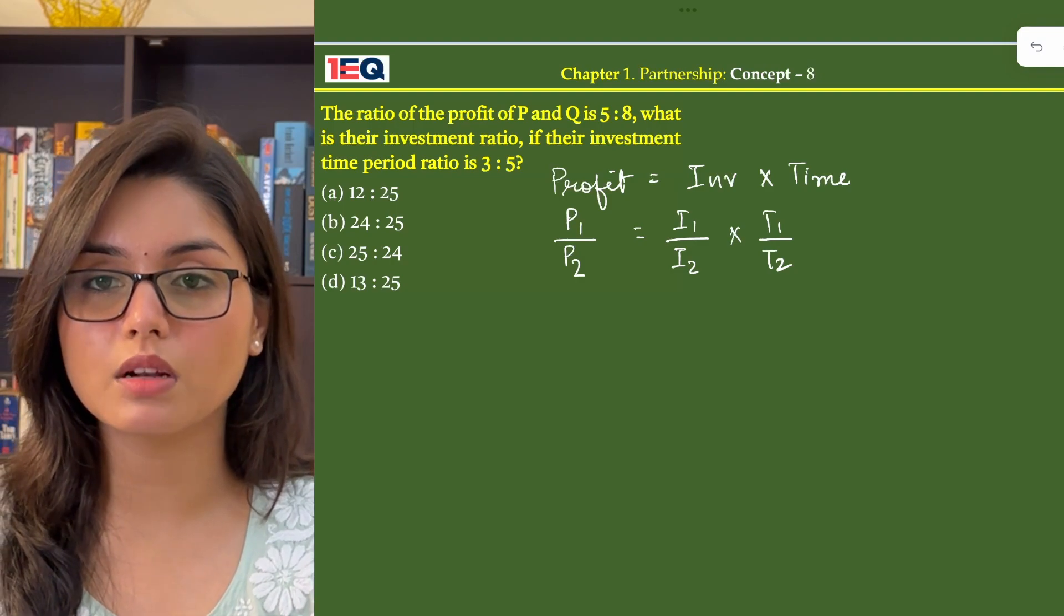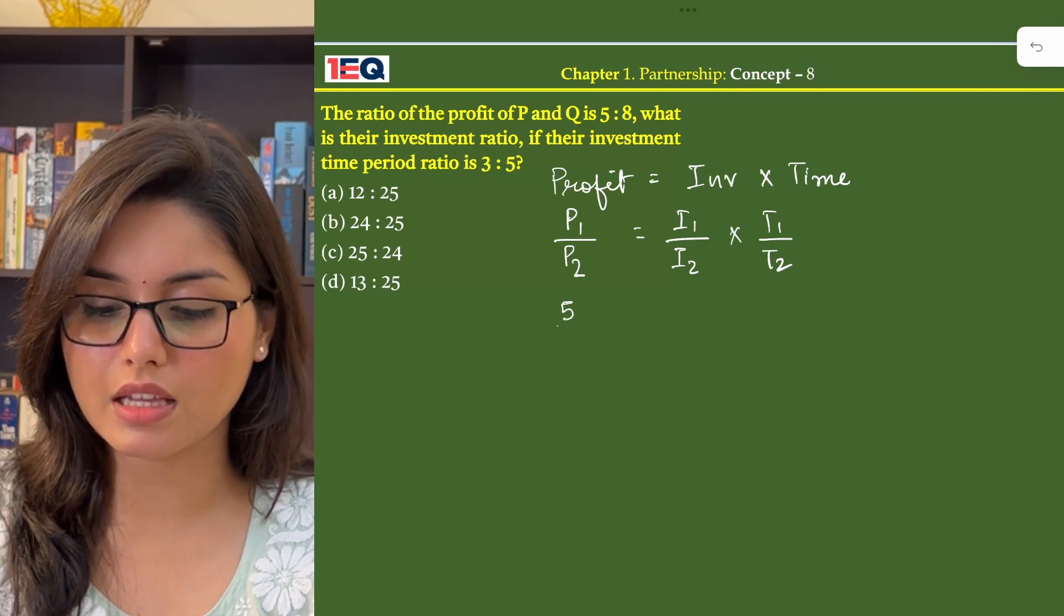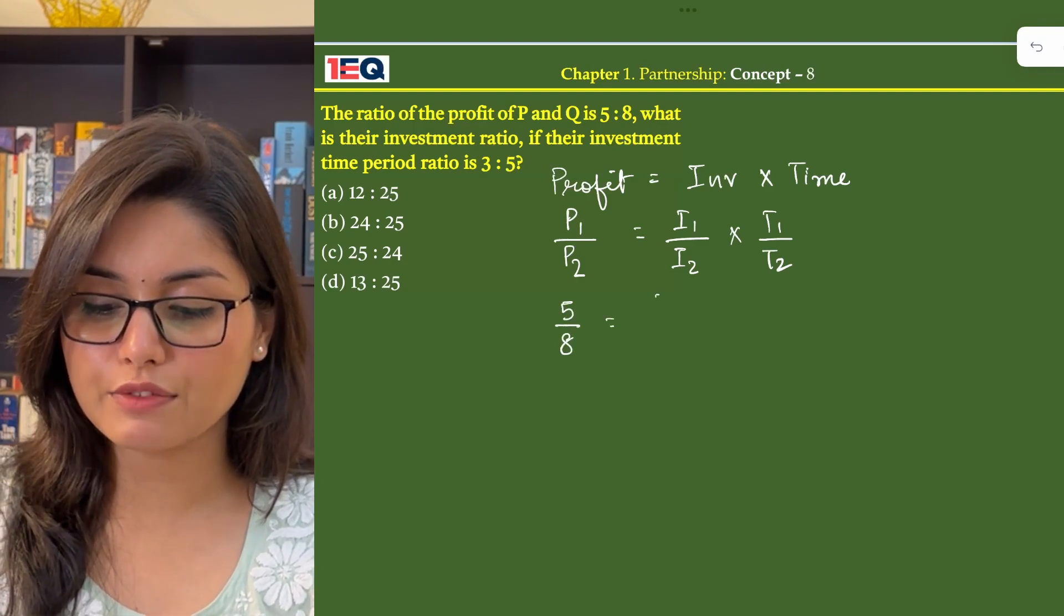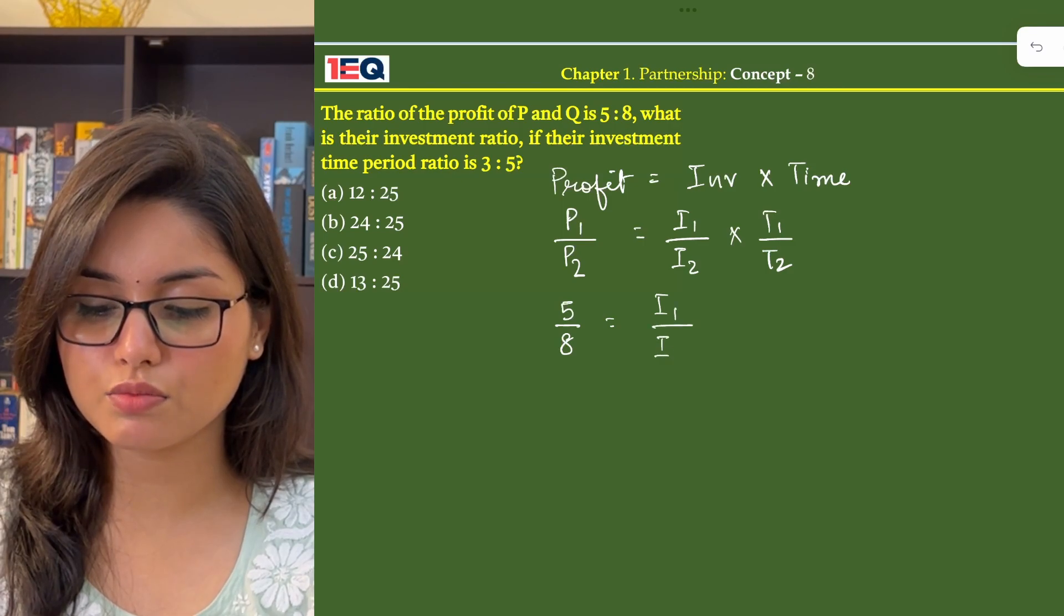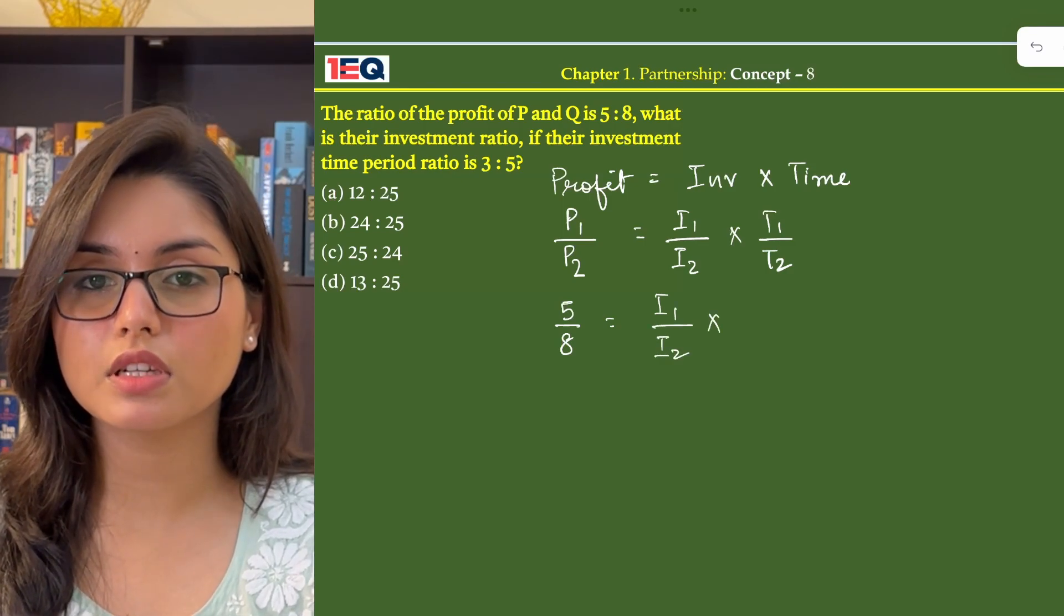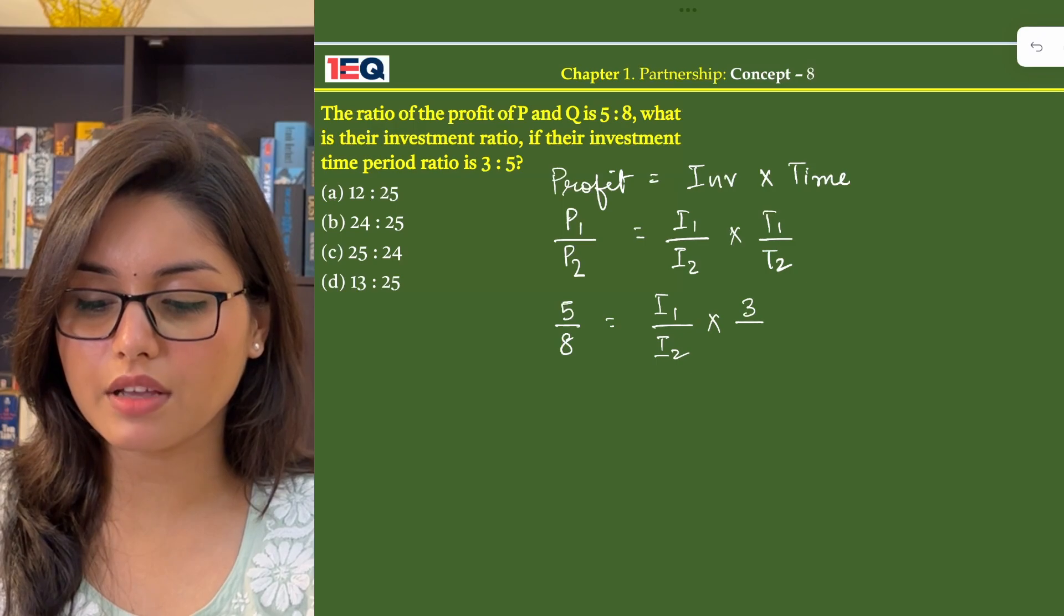Now we know the values of P1, P2 that is 5 by 8. We have to find I1 by I2. We know the time period that is 3 by 5.